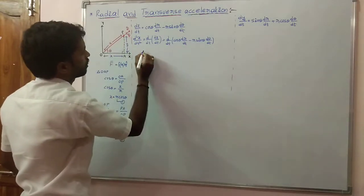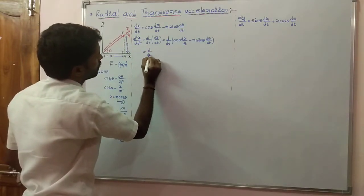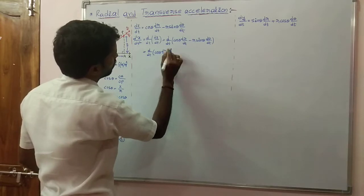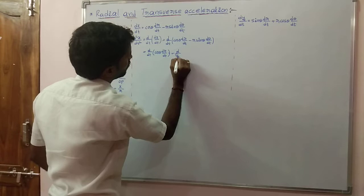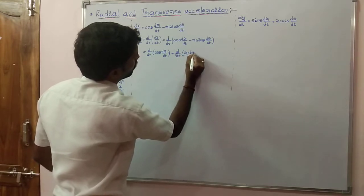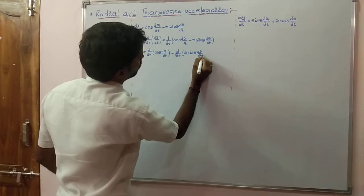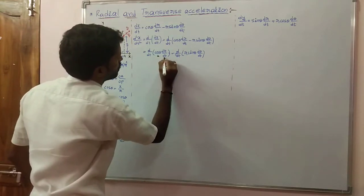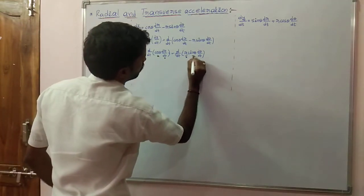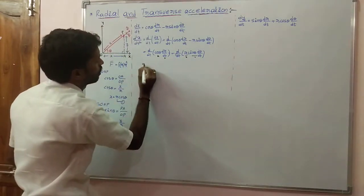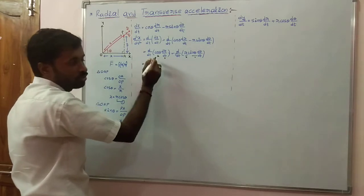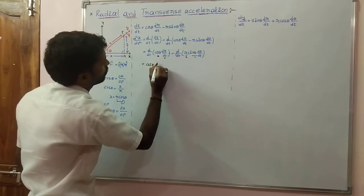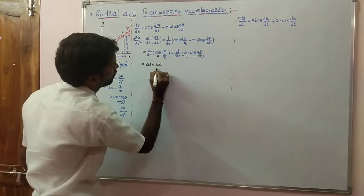Now we separate these two terms: d/dt of (cos theta into dr/dt) minus d/dt of (r sin theta into d theta/dt). Let us say the first part is u and the second part is v. We apply the uv formula: u dv + v du. For the first term, cos theta into the derivative of dr/dt gives d²r/dt².